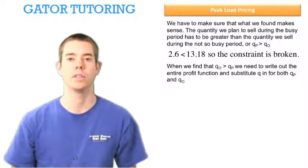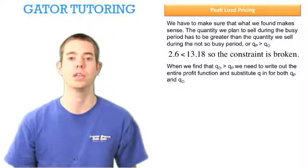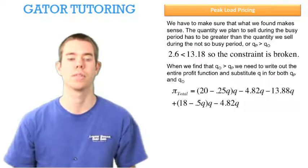When we find that the quantity in off-peak is greater than the quantity in the peak period, we need to write out the entire profit function and substitute just Q in for both Qp and Qo. Let's write out that whole profit function.